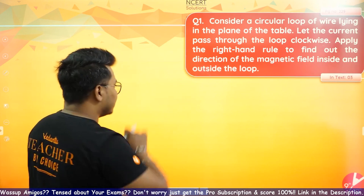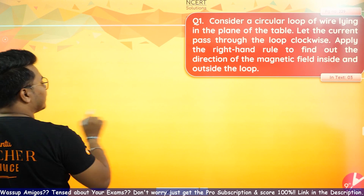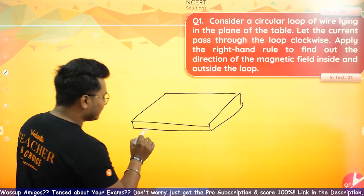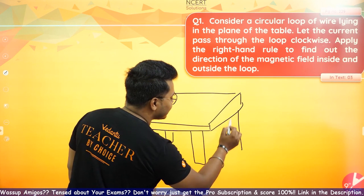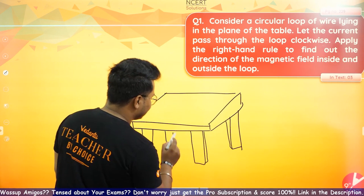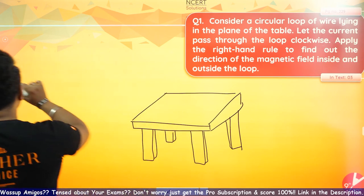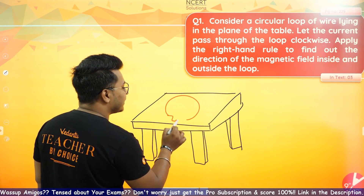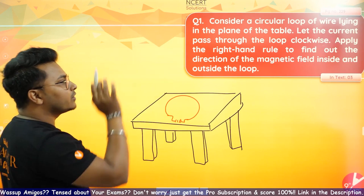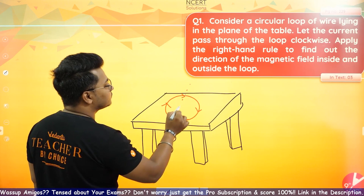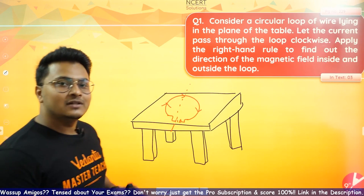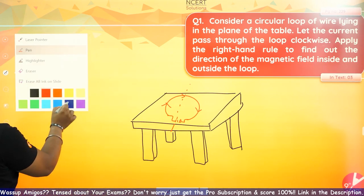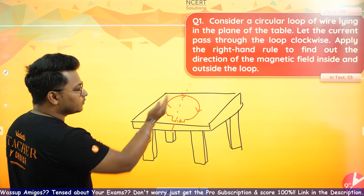This is the first question — it's a very simple one. Consider a circular loop of wire lying in the plane of the table. We need to find the direction of the magnetic field. Let's take this whole circle and apply Maxwell's right-hand thumb rule.